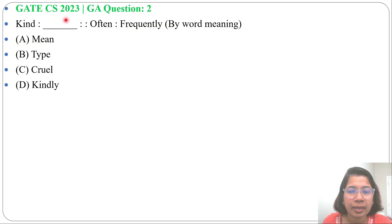Let's solve a previous question from General Aptitude. This question was asked in GATE CS 2023, GA Question Number 2: Kind : ____ :: Often : Frequently (by word meaning), and four options are given.